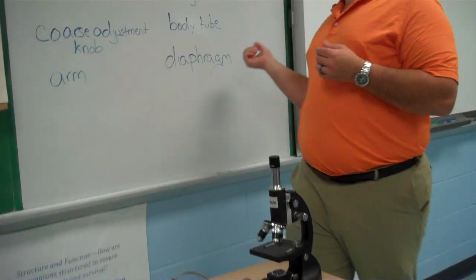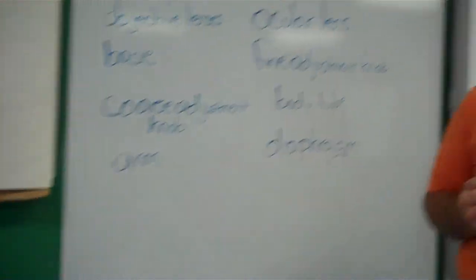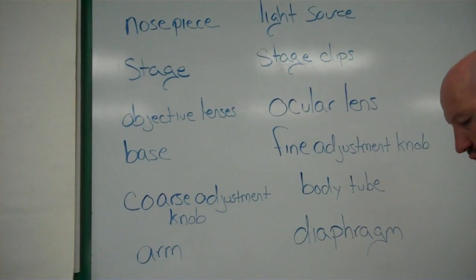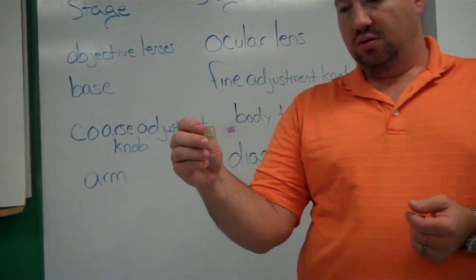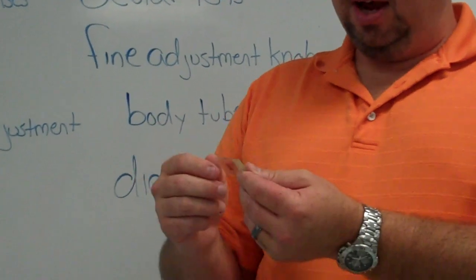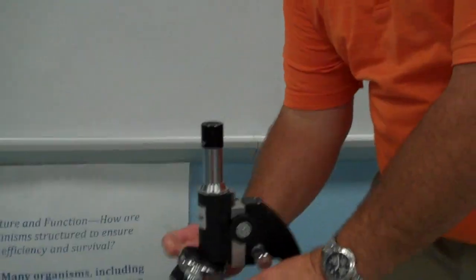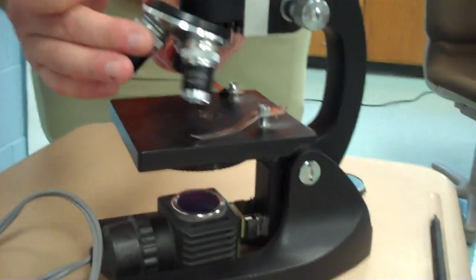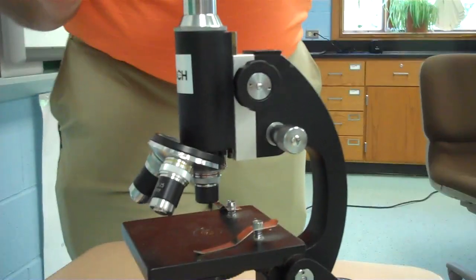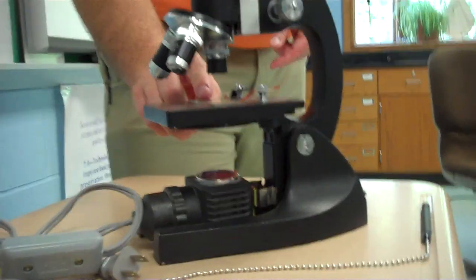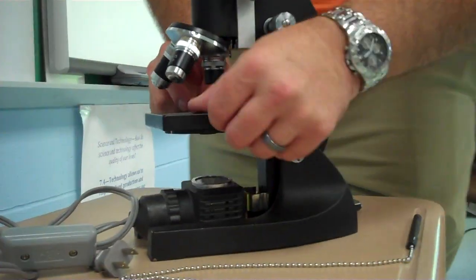So those are the parts of the microscope. Now to properly use the microscope, you have your slides. Now you place the slide on the stage and you look at it under the 4x magnification and make sure you center the specimen on the stage in the upright position.